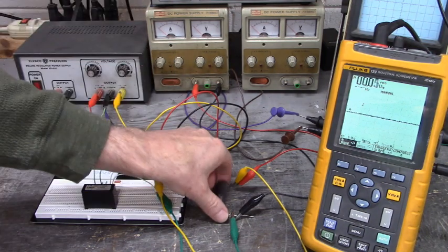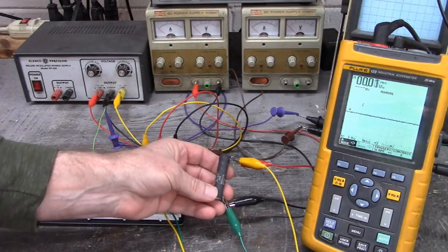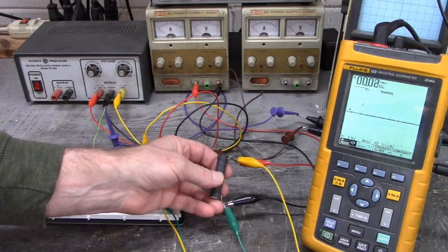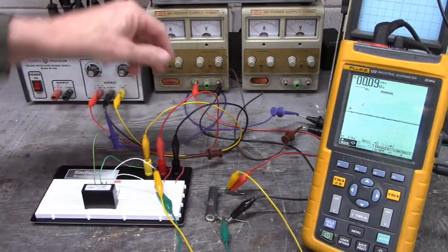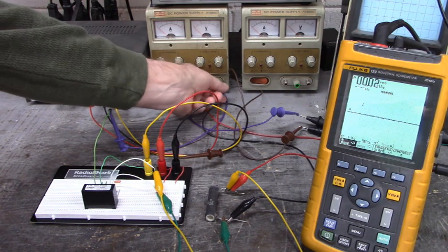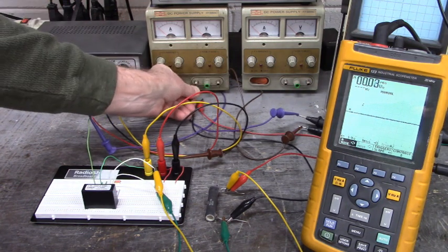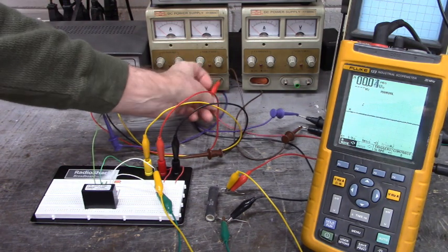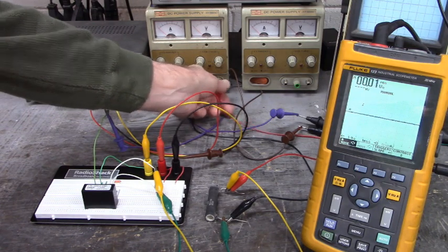Now I have a 0.5 ohm 20 watt resistor here with the power supply capable of producing 5 amps through that resistor.